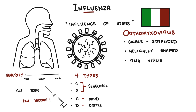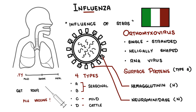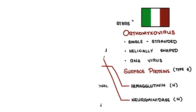The A viruses are further divided based on two proteins on their surface: hemagglutinin and neuraminidase. The flu virus is notorious for its ability to change, undergoing alterations in two main ways — antigenic drift and antigenic shift.